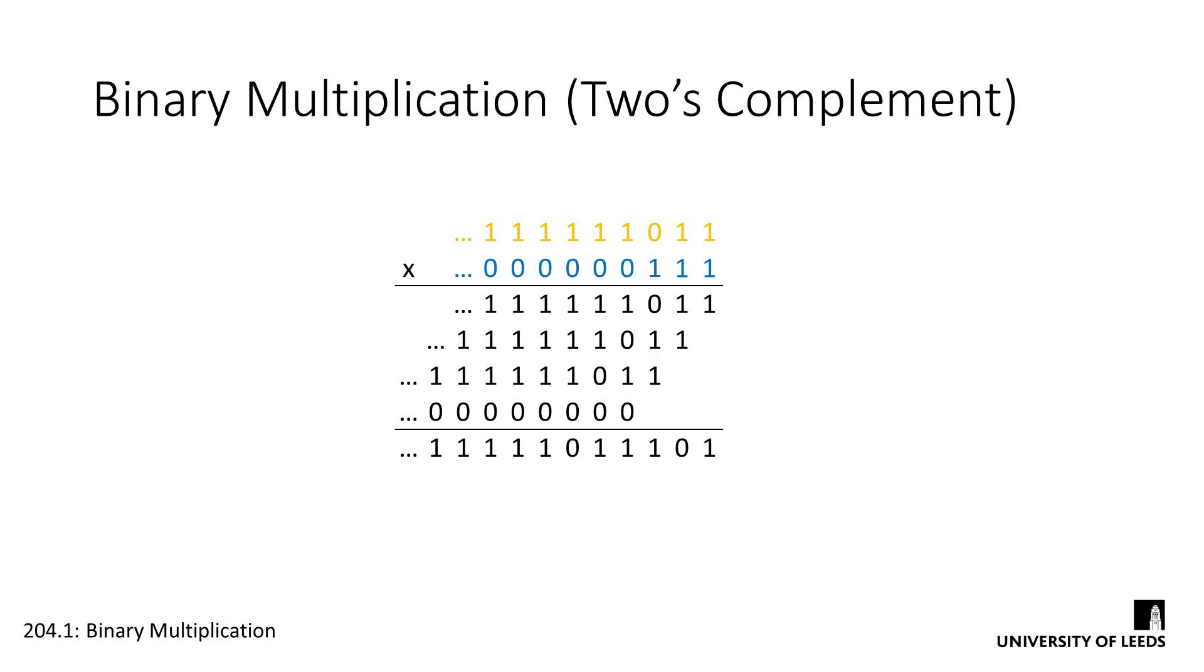So in this example, we're using a 4-bit multiplier, so our output will be the 8 least significant bits of the result. So now when we check our answer, we can see that we've got minus 35 here, and the calculation has worked correctly.